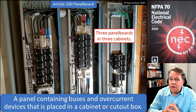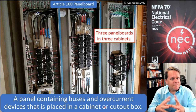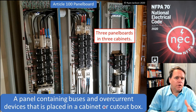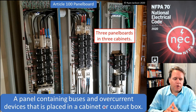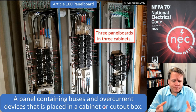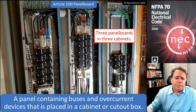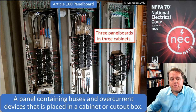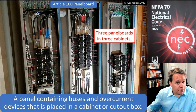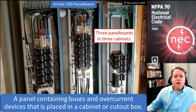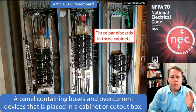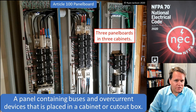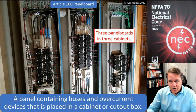All of these are defined in article 100 and they're all fairly similar. Let's start with panel board. A panel board is simply a panel containing buses and overcurrent devices that's placed in a cabinet or cutout box. Here in the photograph we have three panel boards installed in three cabinets.